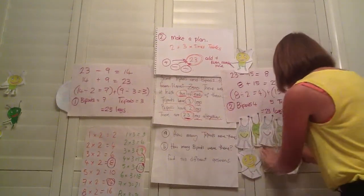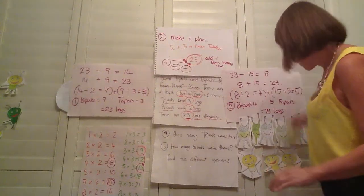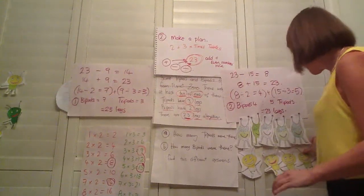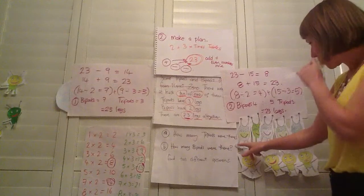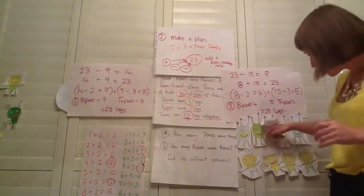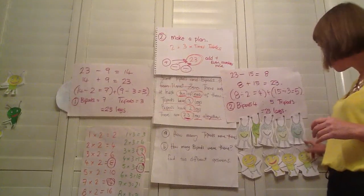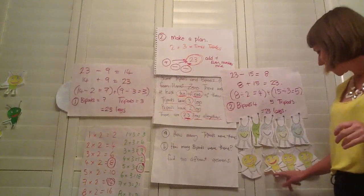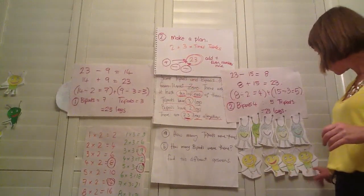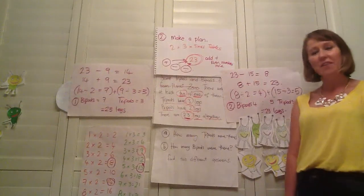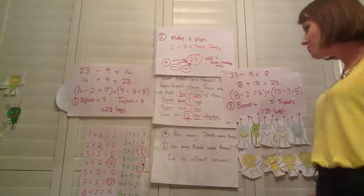One, two, three, four, five, six, seven, eight, nine, 10, 11, 12, 13, 14, 15, 16, 17, 18, 19, 20, 21, 22, 23. Yay. So we counted all their legs and it adds up to 23. So it must be correct.